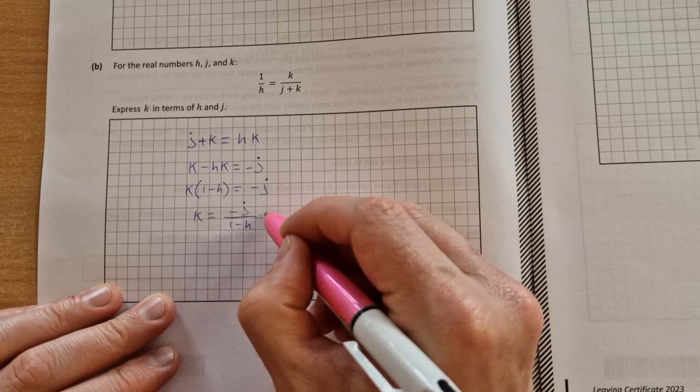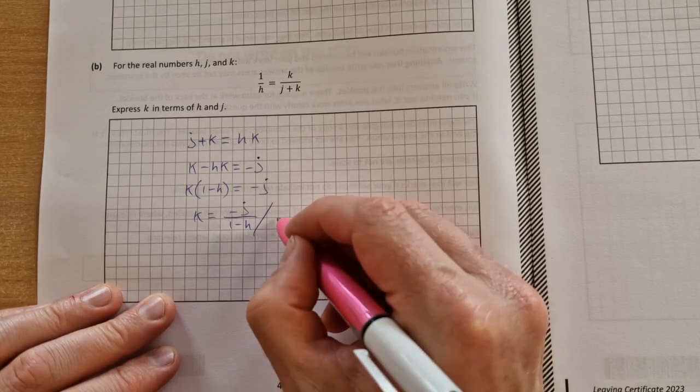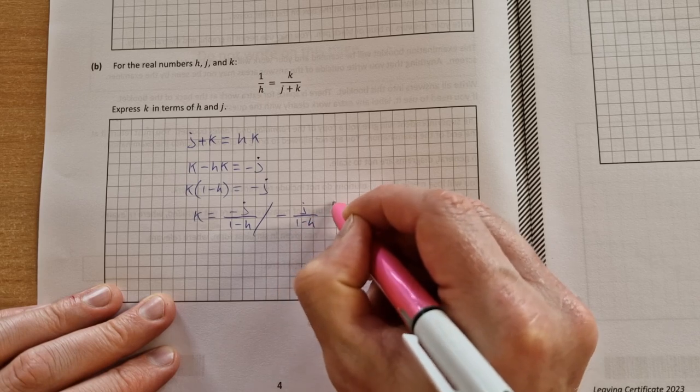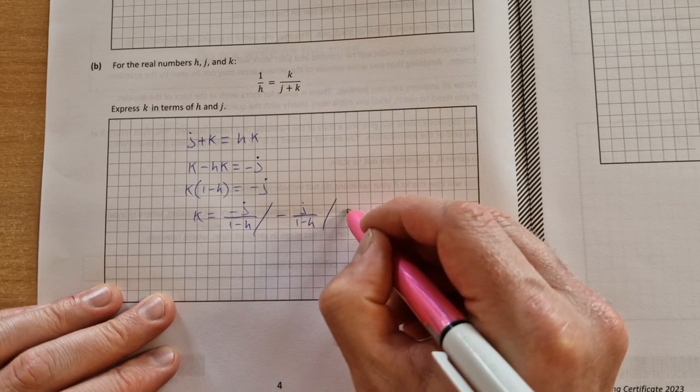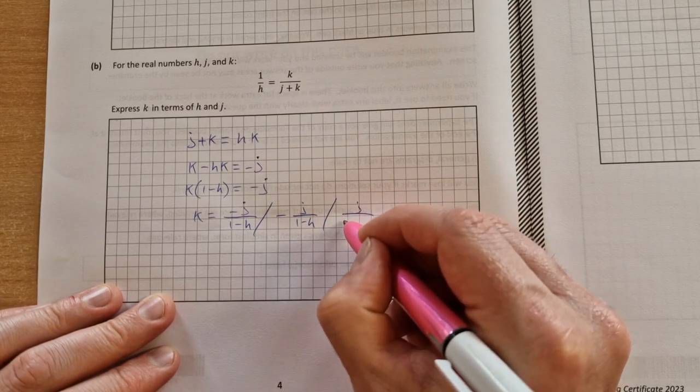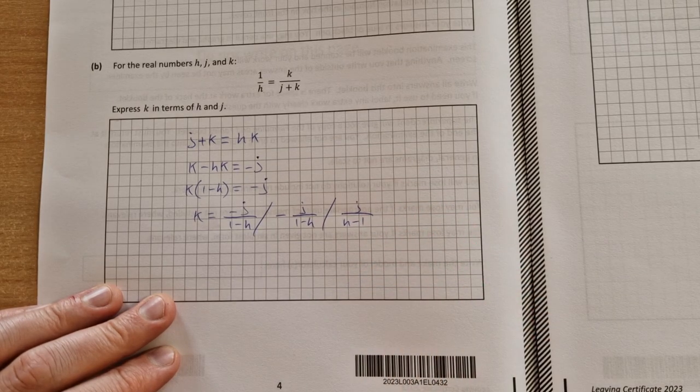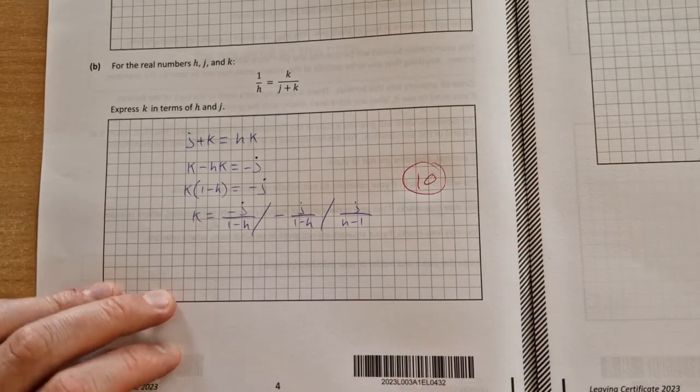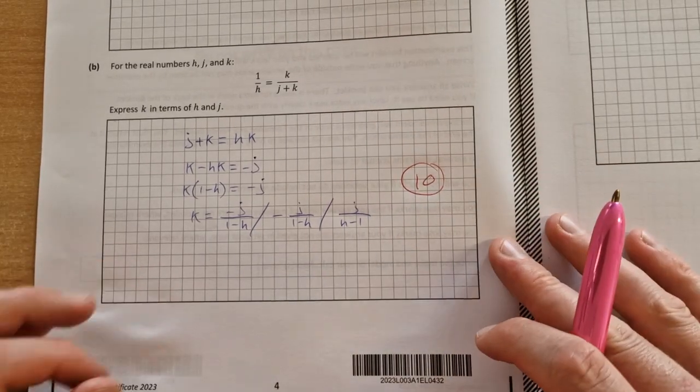You may have got a slightly different answer, which was acceptable. You could have brought the minus outside and said j over 1 minus h, or you could have said that it was j over h minus 1. All of them will give you the same marks, and the marks for that part was 10 out of a possible 30 after the adjustments were made.